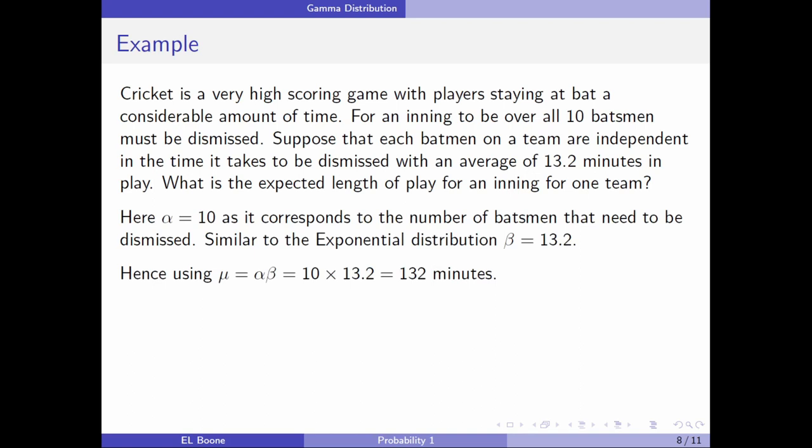Here, alpha equals ten - real easy to pick out because it's the number of times we're looking for. This sounds sort of like a negative binomial-geometric relationship. Exponential is more like geometric, and negative binomial is like this gamma, because we're looking for a specific number of outcomes before our experiment is over. This corresponds to the number of batsmen that need to be dismissed. Similar to the exponential distribution, we can come up with beta equals 13.2.